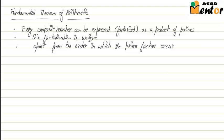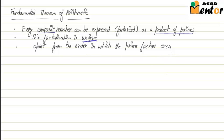Hello students, today we will be talking about the Fundamental Theorem of Arithmetic. This theorem is very important in understanding the nature of composite numbers. It states that every composite number can be expressed or factorized as a product of primes. This factorization is unique to that particular composite number, and this uniqueness is not affected by the order in which the prime factors occur.